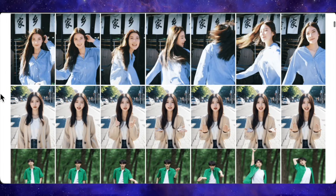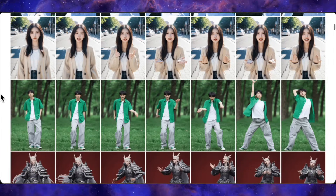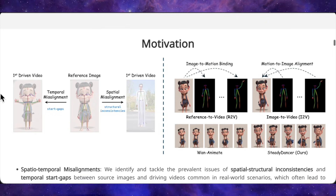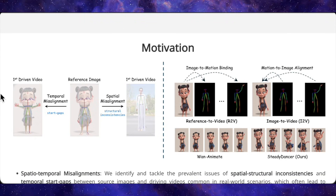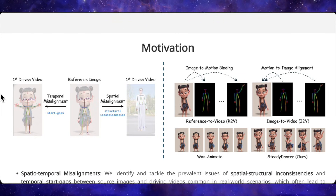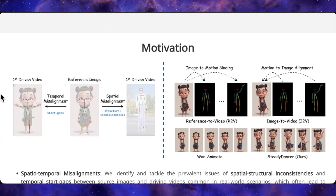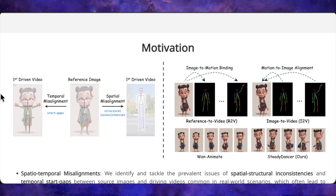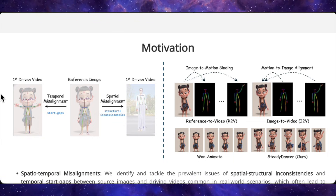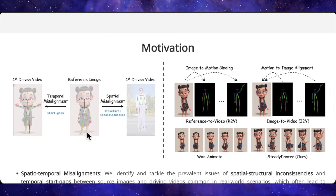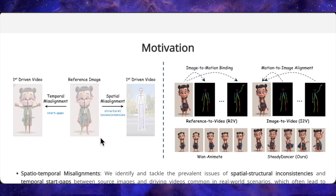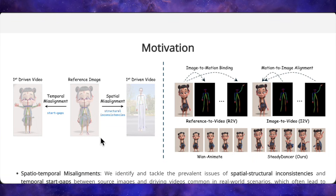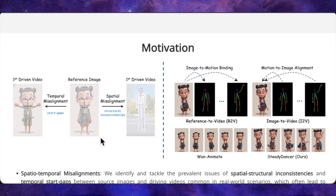So how is this thing actually doing all of that under the hood? At its core, Steady Dancer is built on top of WAN 2.1's image-to-video foundation model — a 14 billion parameter diffusion transformer that already knows how to generate video from a starting frame. But the team made one critical design change: they switched it from the old reference-to-video approach to a true image-to-video setup that locks in your first frame and refuses to change it.